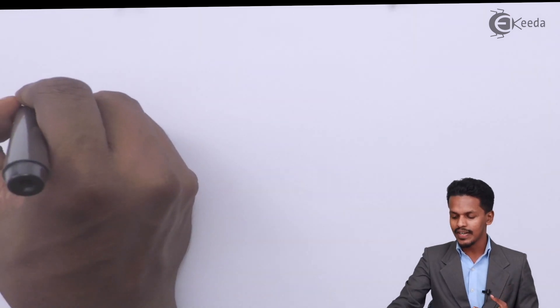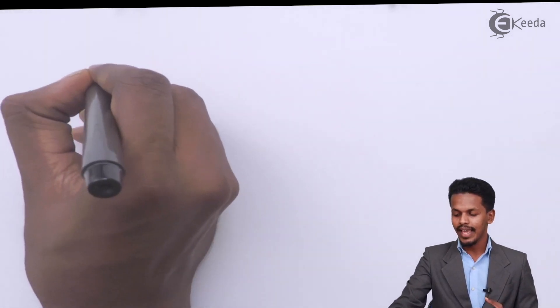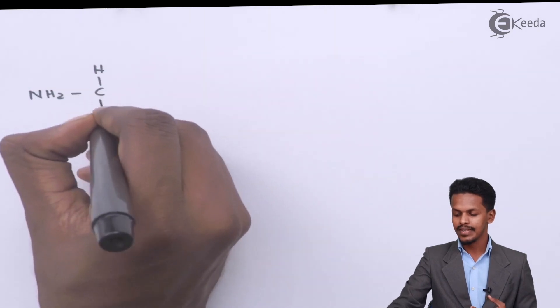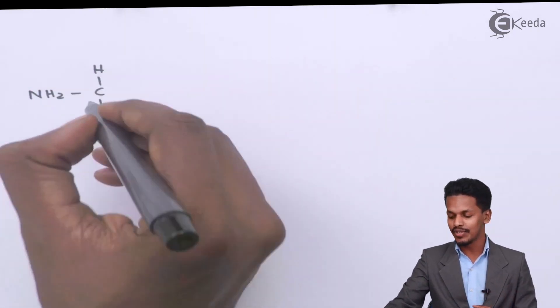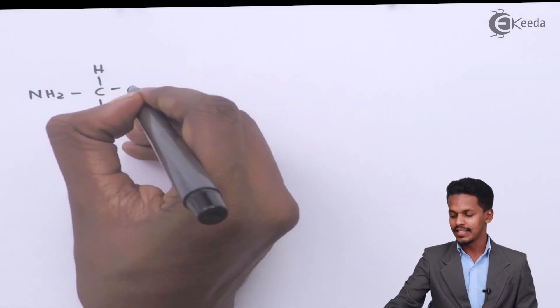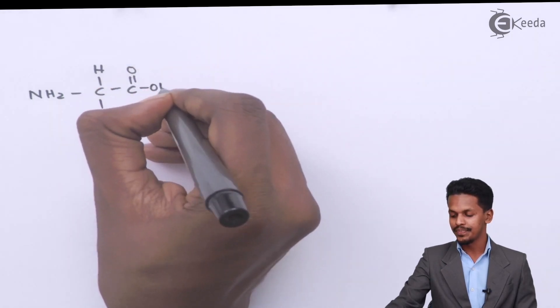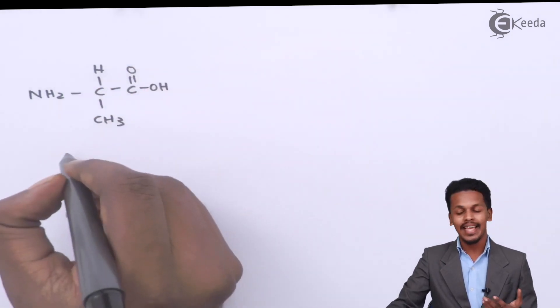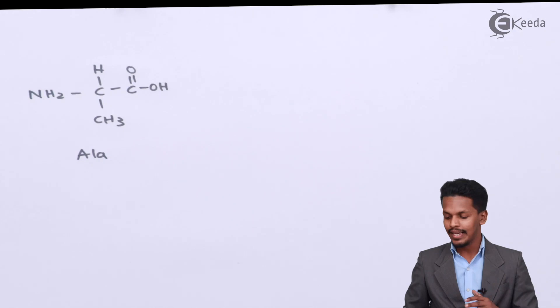Now let me talk about the next reaction. Suppose we have NH2, CH(CH3), C double bond O, OH — here we have replaced the R group with CH3. That is known as alanine, which can be given the symbol ALA.